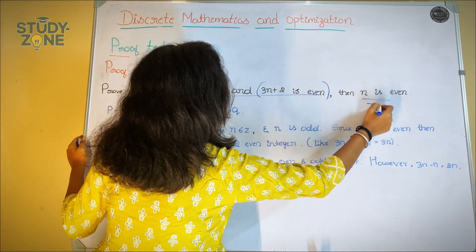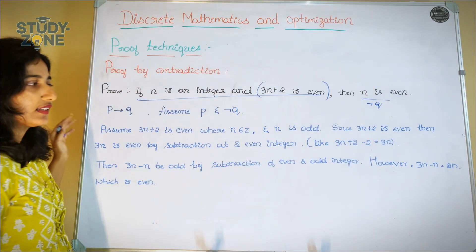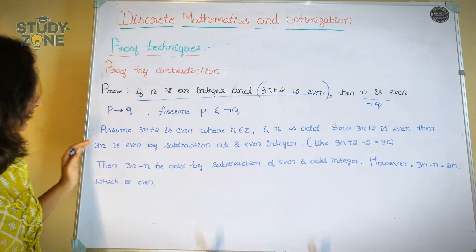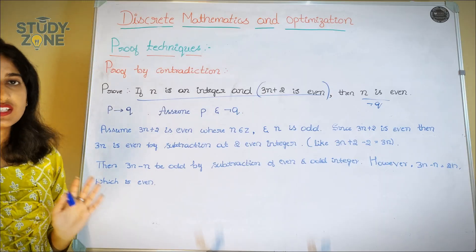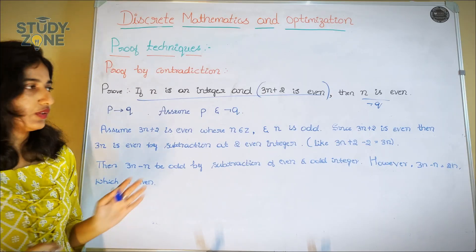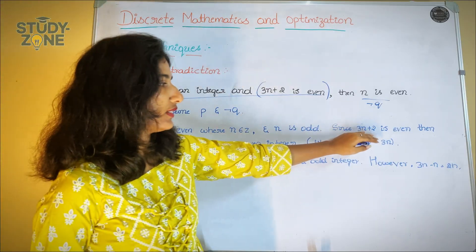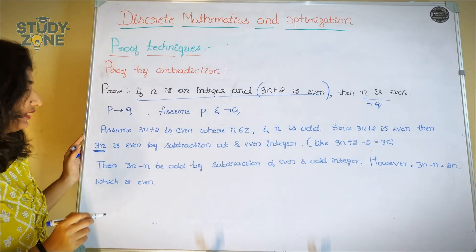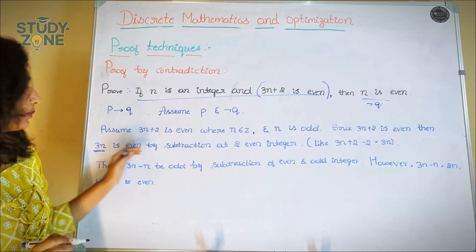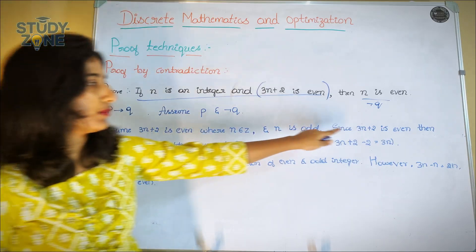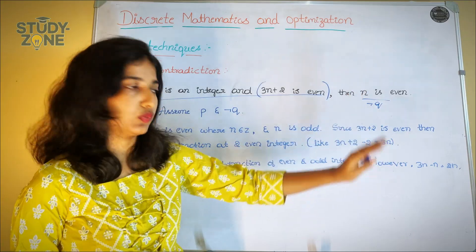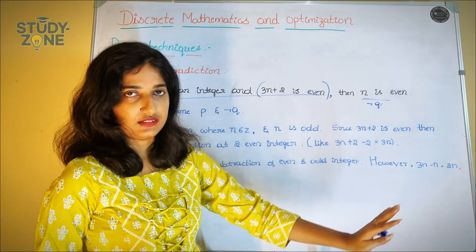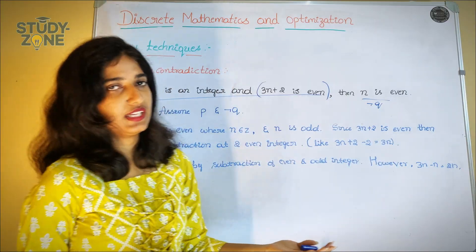Here we are taking negation q, that is n is odd. Since 3n plus 2 is even, then 3n is even. If we add anything even with 3n, it will be even, so we have 3n as even. By subtracting 2 from 3n plus 2, we get 3n plus 2 minus 2 equals 3n, so 3n is even.